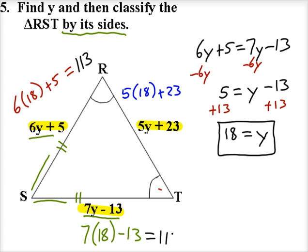Not a surprise there because those are the congruent legs in an isosceles triangle. But this third side, 5 times 18 plus 23, is also equal to 113. So what that tells me is all three of the sides are congruent to each other, and so triangle RST is not just isosceles, it's actually equilateral.